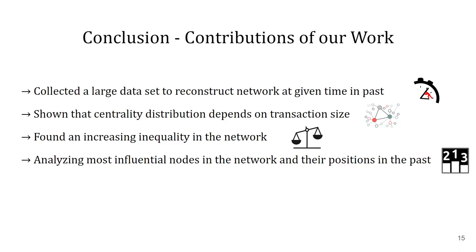In conclusion, we have collected a large dataset consisting of over 8 million gossip messages, which we then used to rebuild the Lightning Network at specific points in time using our Lightning Network Time Machine. We have found that there is a trend of increasing centralization and a high level of inequality in the network, which means that only a handful of nodes participate in most transaction routes. We have also shown that the level of centrality depends on the transaction size. Lastly, we have uncovered that some nodes remain in the top ranks over the examined period of 2 years, which are mostly large hubs by known node providers.